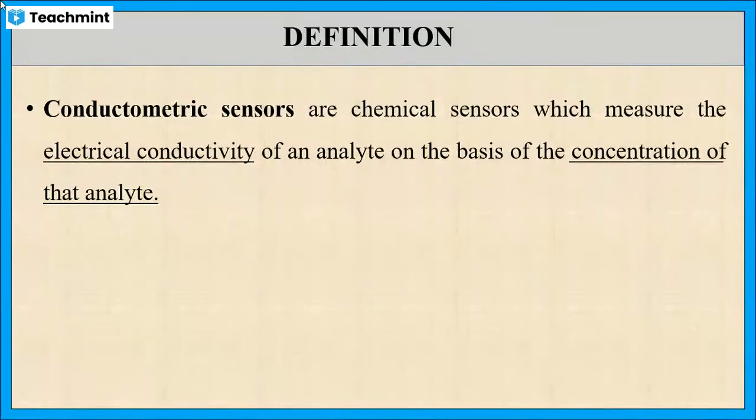The device used to measure conductivity, called a conductivity cell, is known as a conductometric sensor. The conductivity measured is directly proportional to the concentration of the solution.